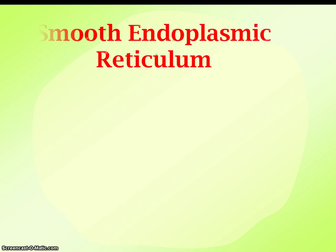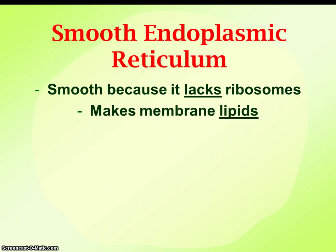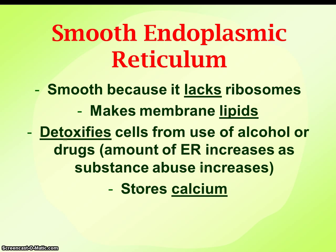The smooth endoplasmic reticulum doesn't have any ribosomes, so it doesn't transport proteins. However, it does have a function — it helps make lipids for the membrane. The membrane is made up of phospholipids, and more are needed to maintain the membrane structure and replace old worn-out parts. This is where new lipids for the membrane are made. It's also used for detoxifying and storing calcium.